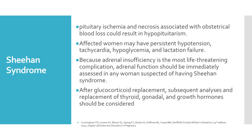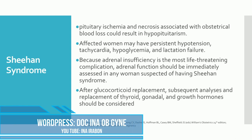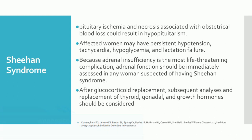Next is Sheehan syndrome. This is secondary to pituitary ischemia and necrosis associated with obstetrical hemorrhage, resulting in hypopituitarism. Affected women may have persistent hypotension, tachycardia, hypoglycemia, and lactation failure. Because adrenal insufficiency is the most life-threatening complication of Sheehan syndrome, adrenal function should be immediately assessed in any woman suspected of having this condition. After glucocorticoid replacement, subsequent analysis and replacement of thyroid, gonadal, and growth hormones should be considered.